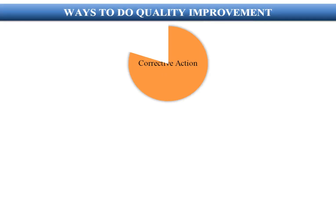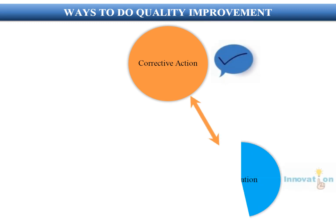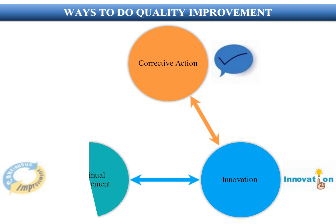Ways to do quality improvement include: corrective action, innovation, and continual improvement.